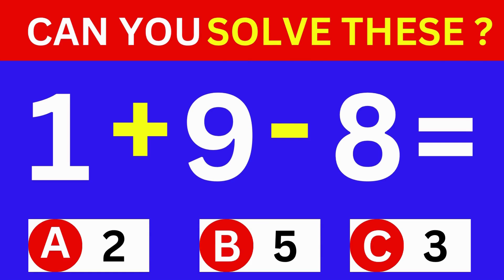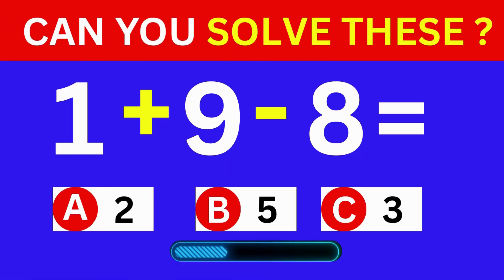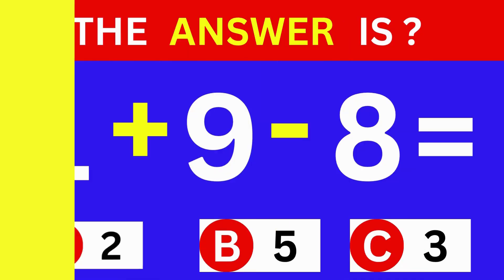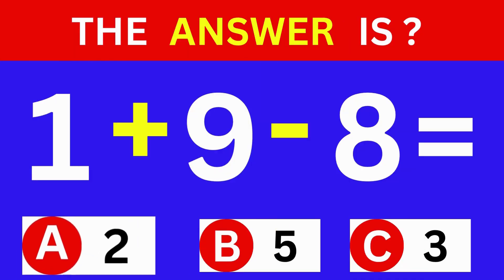1 plus 9 minus 8 equals? A: 2. B: 5. C: 3. The answer is option A: 2.